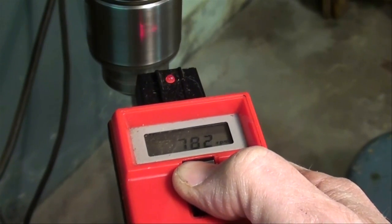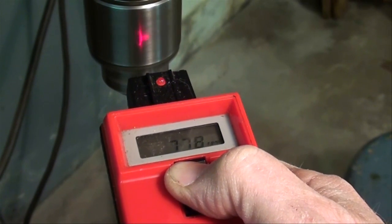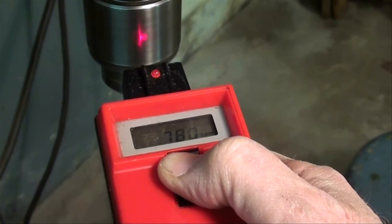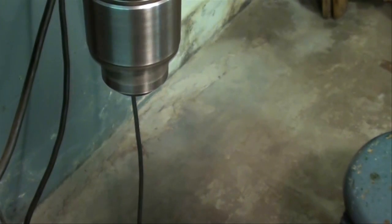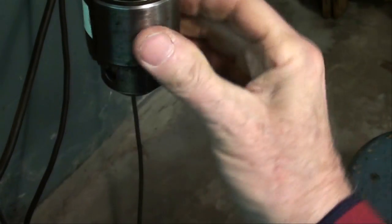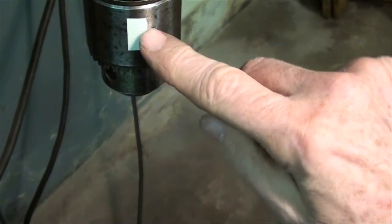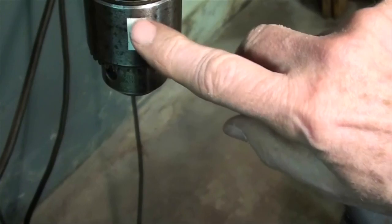This is the Blue Point electronic tachometer, and it pretty much agrees with the stroboscope at about 780 RPM. And in order to use it, we have to use their reflective tape that was provided with the instrument.